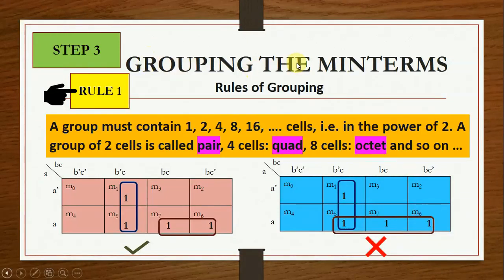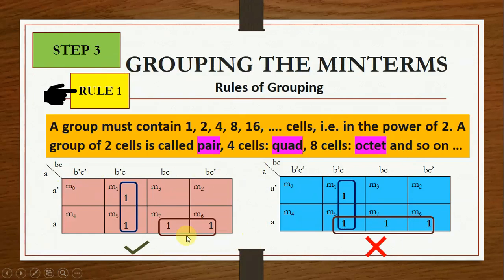Step 3 is grouping the minterms. There are several rules of grouping. Rule 1: a group must contain 1, 2, 4, 8, or 16 cells — that is, a power of 2. A group of 2 cells is called a pair, 4 cells is called a quad, and 8 cells is called an octet. For example, you can have a group of 2 ones but not a group of 3 ones — that is wrong.